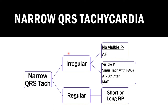If QRS complexes occur at irregular intervals but you see visible P waves before most QRS complexes, then it is either sinus tachycardia with premature atrial complexes, atrial tachycardia, atrial flutter, or multifocal atrial tachycardia. In this EKG, the QRS complexes occur at regular intervals, so it is not atrial fibrillation and not multifocal atrial tachycardia. This is therefore a regular narrow QRS complex tachycardia, leading us to the next decision point: short RP versus long RP tachycardia.